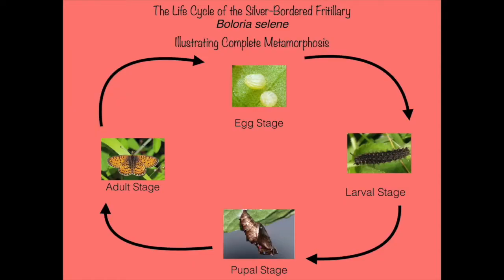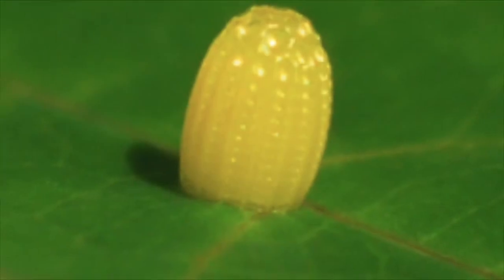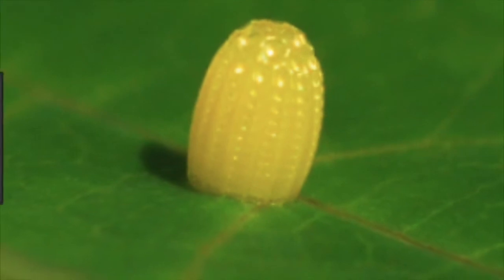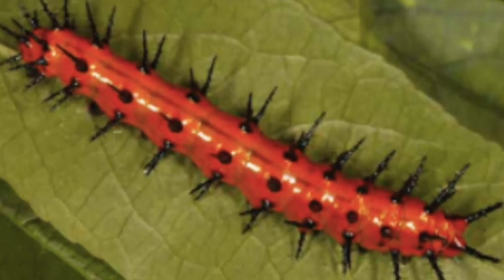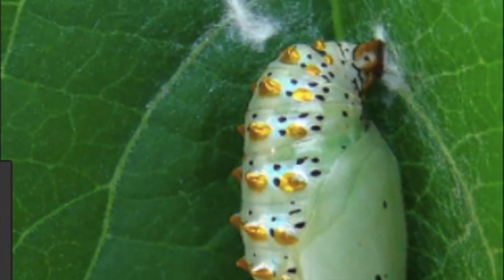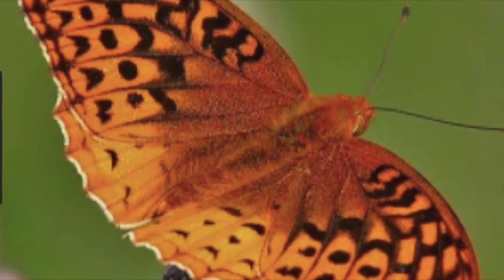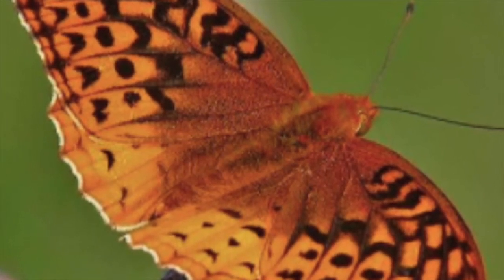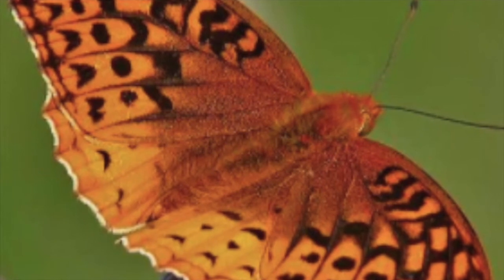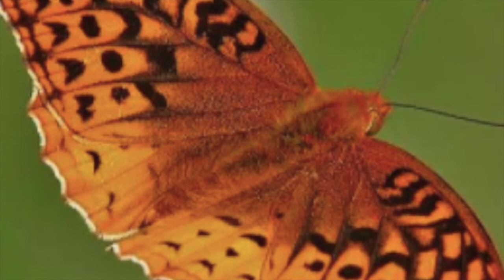The life cycle of the fritillary butterfly is different because it has four stages: egg, larva, pupa, and adult. This means the insect goes through a complete metamorphosis. It changes its body from a caterpillar to a butterfly with orange and black wings. Isn't it interesting that the female adult lays their eggs on the underside of a leaf?